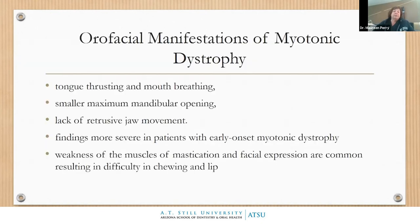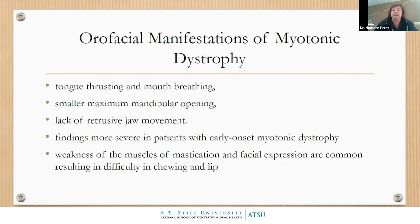Oral facial manifestations of myotonic dystrophy include tongue thrusting, mouth breathing, reduced mandibular opening, lack of retrusive jaw movement, and weakness in the muscles of mastication and facial expression. The earlier the onset, the more severe the oral manifestations. Patients can develop severe difficulty chewing and will bite their lip frequently.